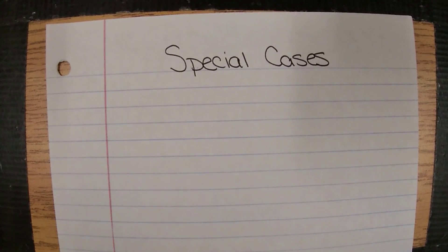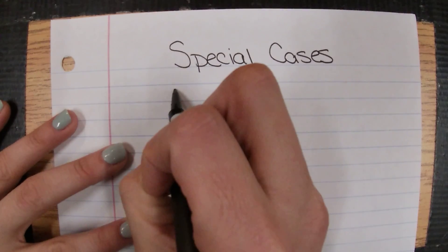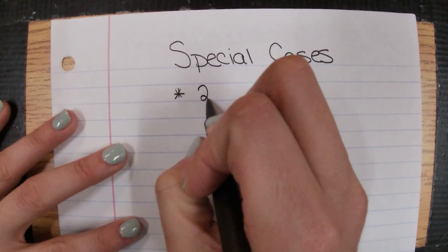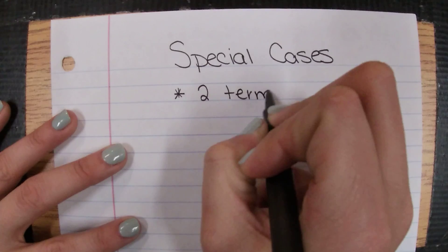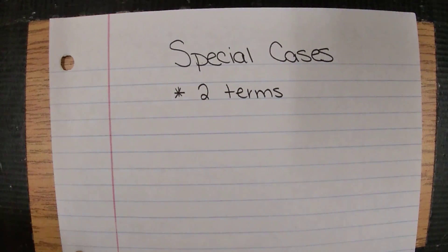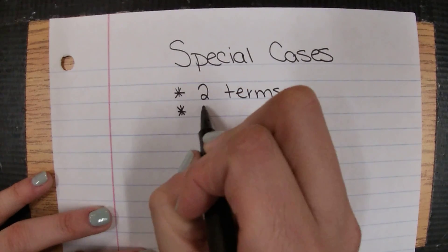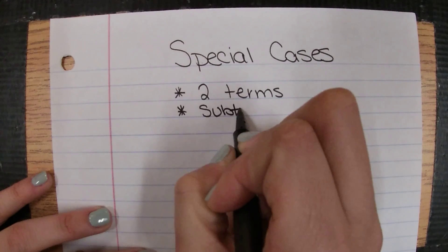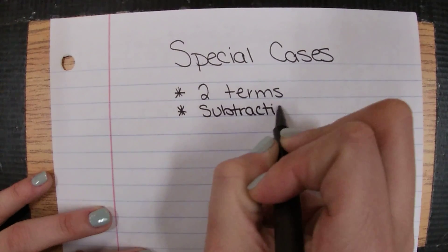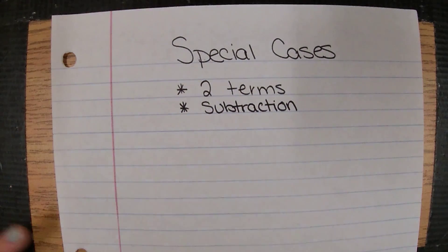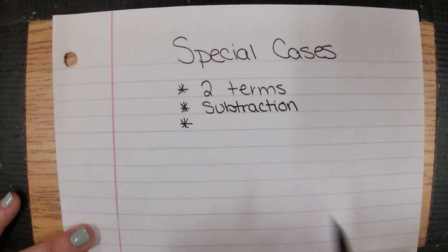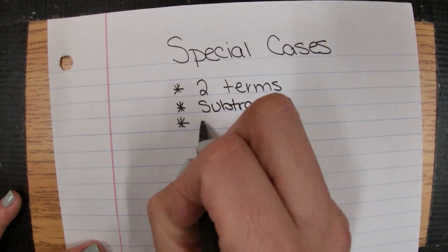Now we get to special cases and it has even more qualifications. Special cases have to be two terms, it has to be subtraction, and then here's the tricky piece: they have to be perfect squares.